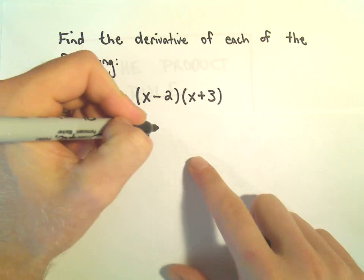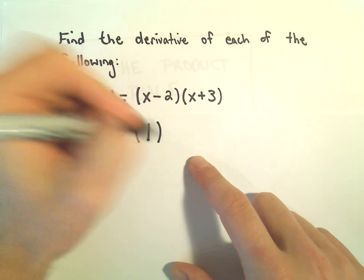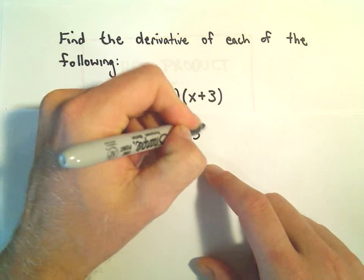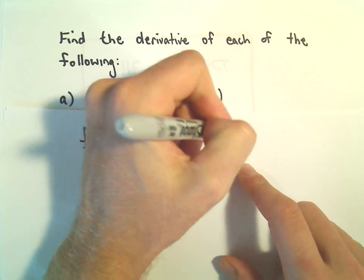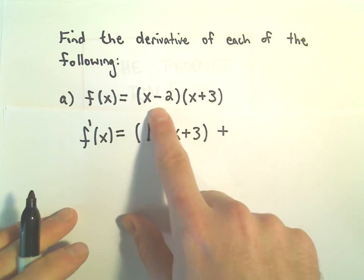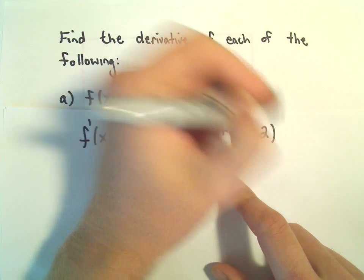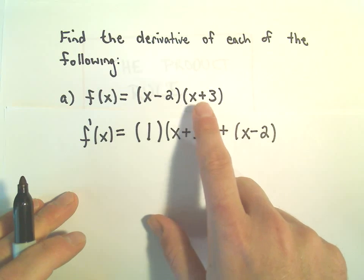So I'm not even going to write it in there. And then we'll have the (x+3), so we're leaving that part alone. And then we'll stick our plus sign in between there, and now we'll leave the (x-2) alone. And then we'll take the derivative of (x+3).